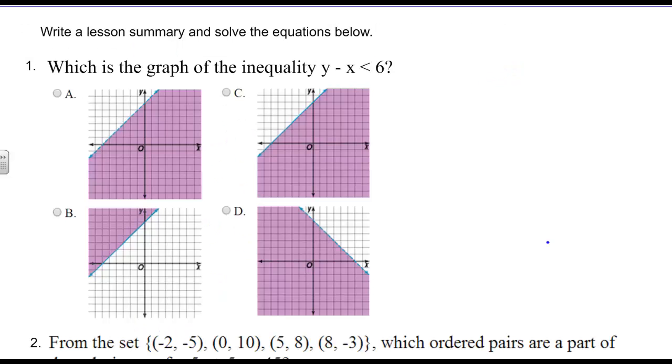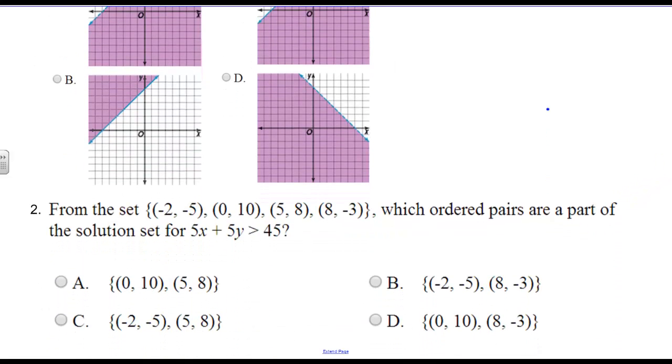So, go ahead and write your lesson summary, and here's the first equation of the day. Choose which one of the graphs best typifies this inequality. And then secondly, I'd like you to take, and from this solution set, which ordered pairs are part of the solution set of this inequality. So which of these are in the solution region? You might want to graph that just to check yourself. All right, we'll see you tomorrow.